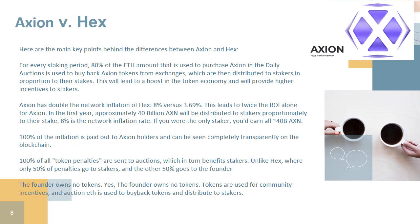100% of all token penalties are sent to auctions, which in turn benefits stakers. Unlike HEX, where only 50% of penalties go to stakers and the other 50% goes to the founder. The founder owns no tokens — yes, the founder owns no tokens. Tokens are used for community incentives, and auction fees are used to buy back tokens and distribute to stakers.